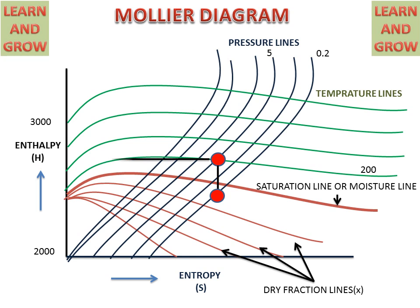Using the scale, we measure horizontally on the enthalpy line to find the values of H1 and H2 for these two points. By measuring H1 and H2, we can calculate the heat drop. This completes the Mollier diagram reading.